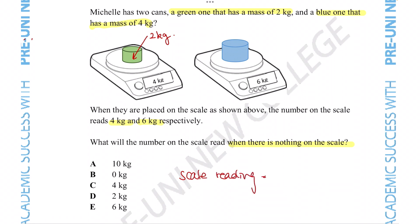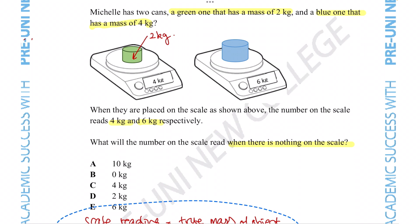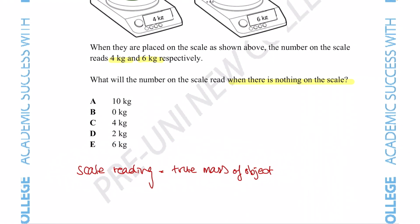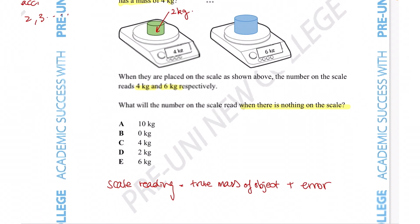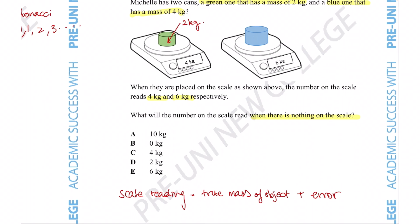If we wanted to represent what's going on in the scale we could say that the scale reading is going to equal the true mass of the object plus the error present with the scale that's causing it to spit out this random number. In the first case scenario, the scale reading is 4 kg and the true mass is 2 kg, so in this case the error is clearly just 2 kg.